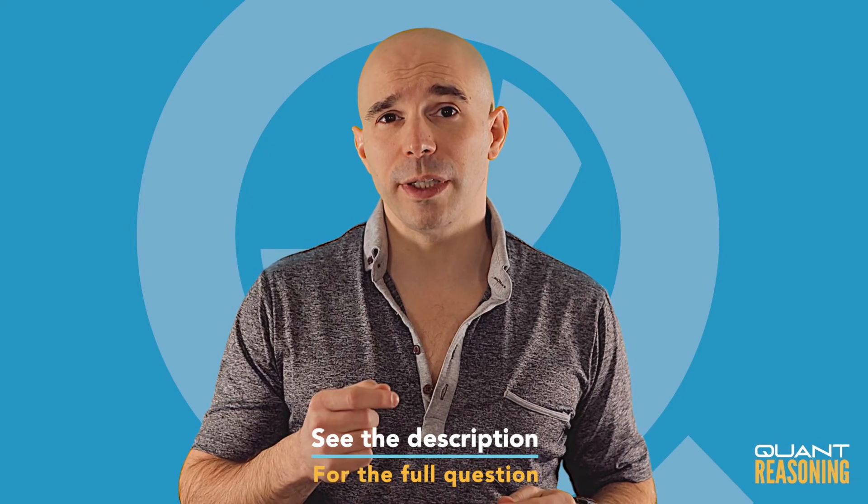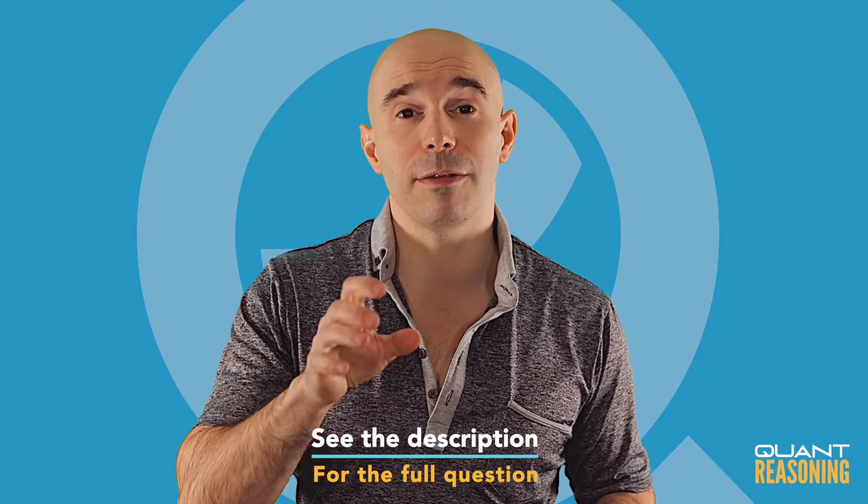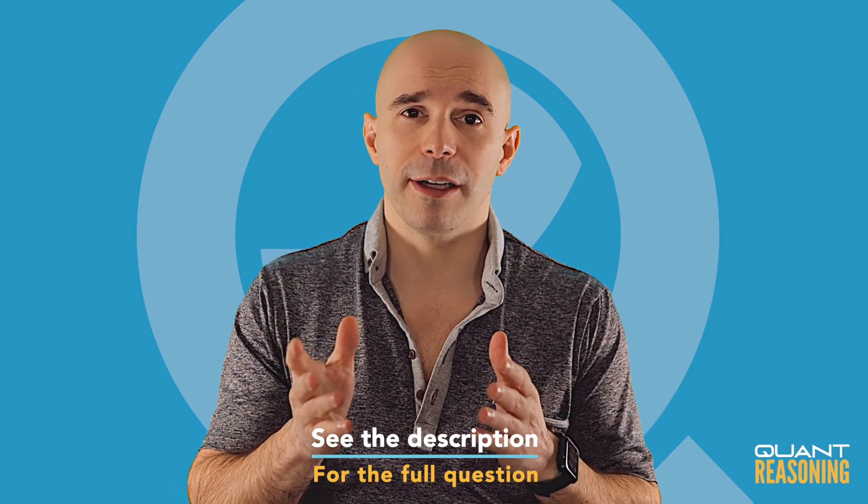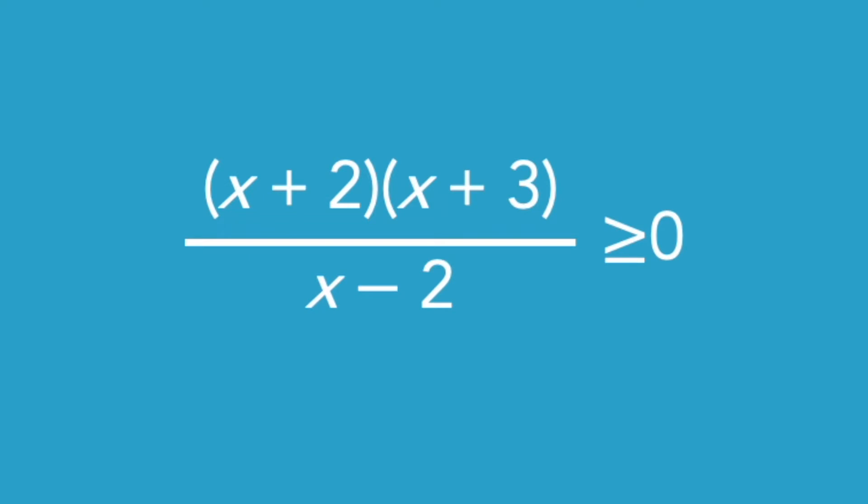This is a pretty challenging question. We're given some ratio, but the numerator of the ratio is itself a product of two factors, and then we have another factor in the denominator. And we're asked about the circumstances in which this whole thing will be non-negative, meaning it'll be zero or positive. We're also told that we're just interested in integer values of x.